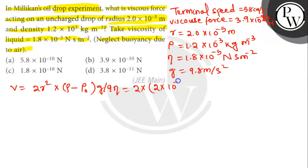So here, 2 × (2×10⁻⁵)² × (1.2×10³ - 0) × 9.8 upon 9 into